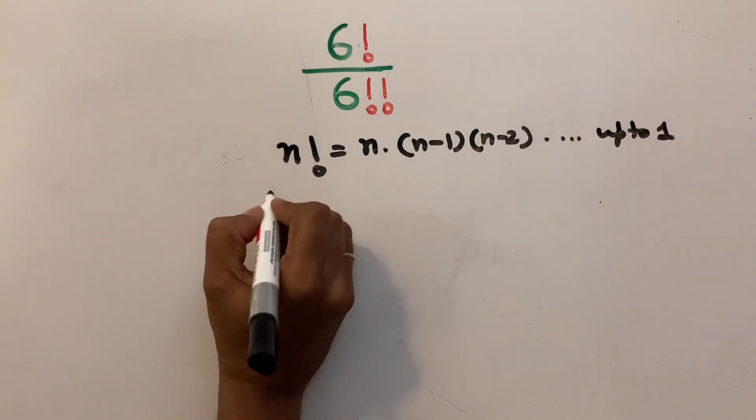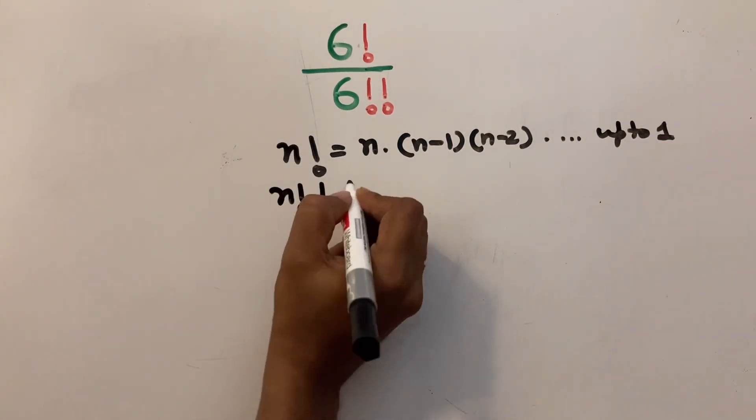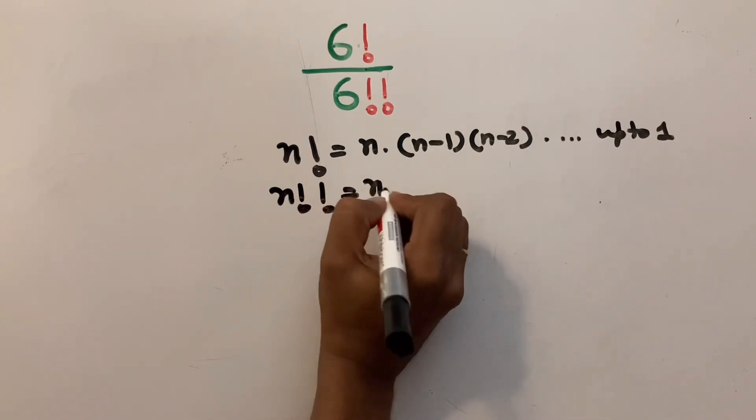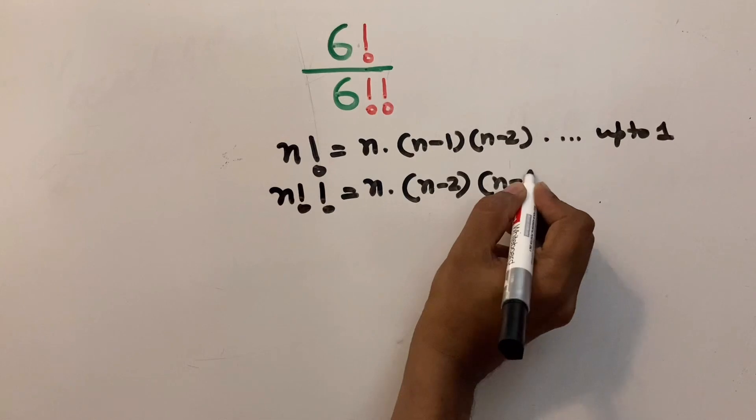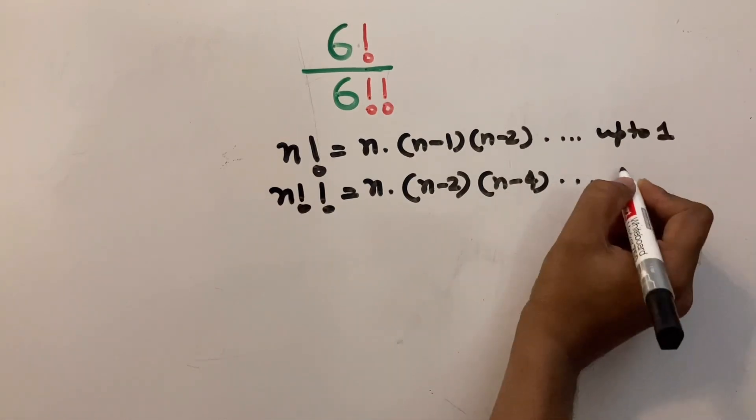Similarly, the double factorial of n is also equals to n multiply n minus 2 multiply n minus 4 up to 1.